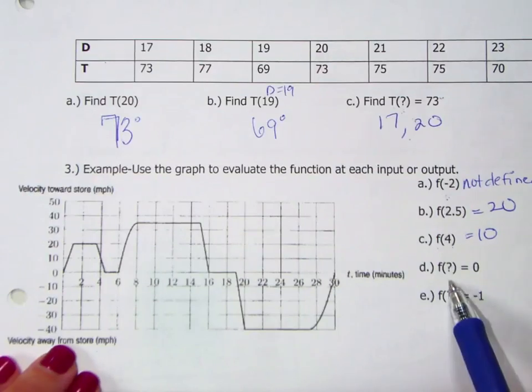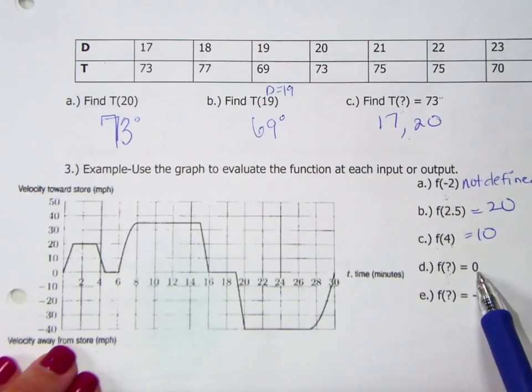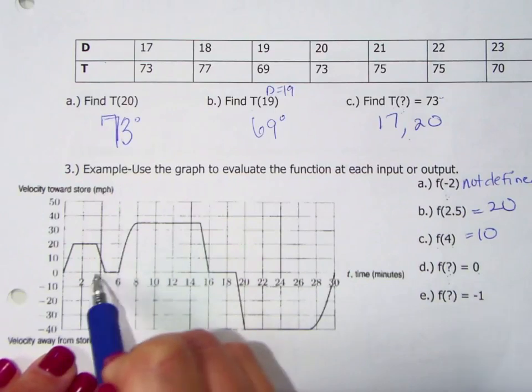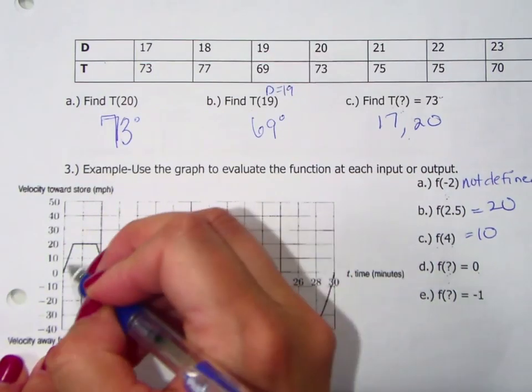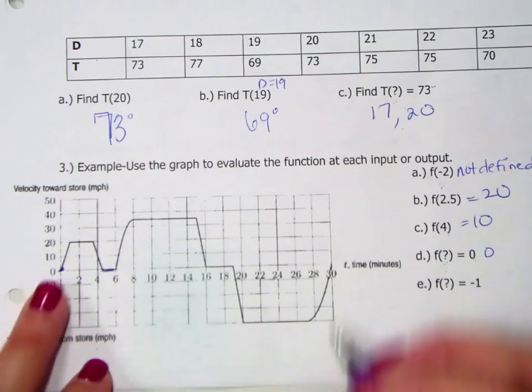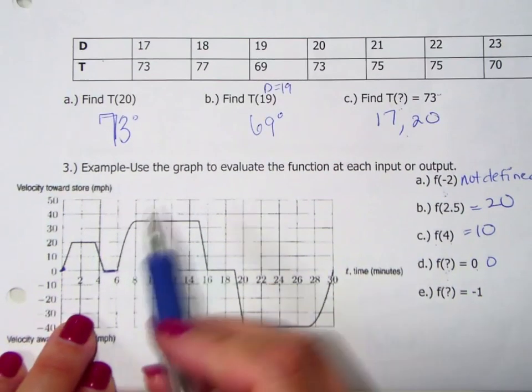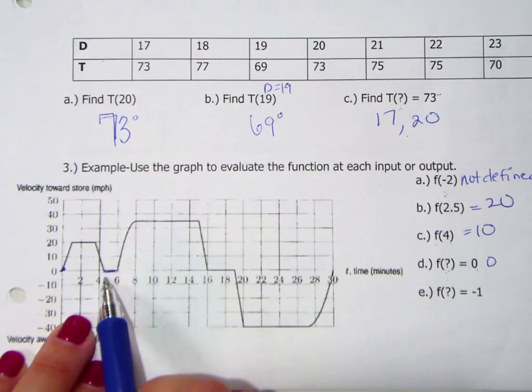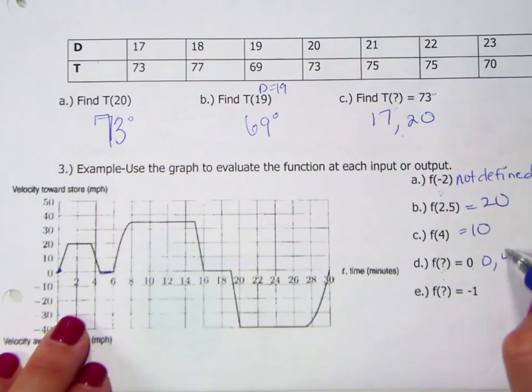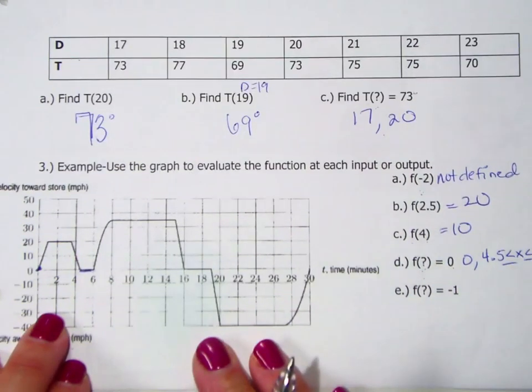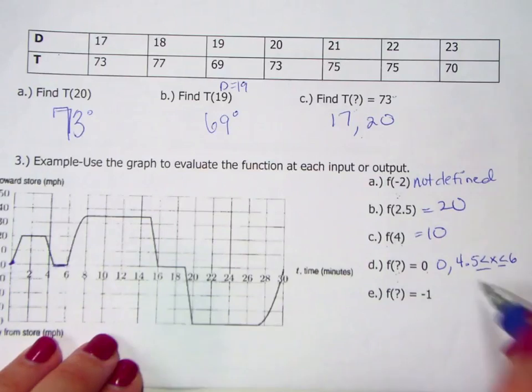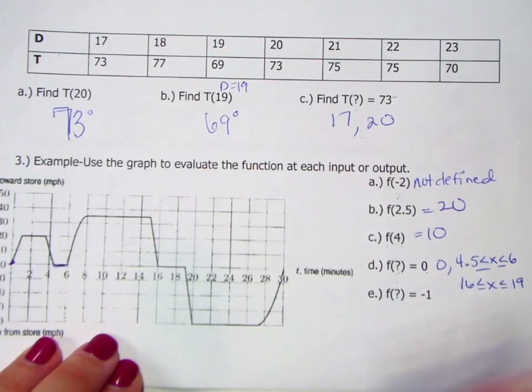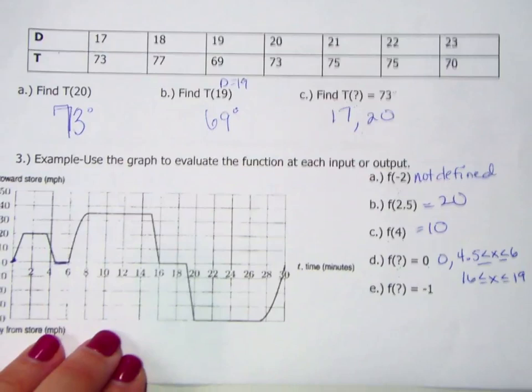Now going the other direction, what's the input when the output is 0? So this time I'm looking when my output is 0. So I'm seeing several times here. Well, when x is 0, y is 0. From about, what, 4.5 to 6, the output is 0. So when else? Over here, from about 16 to 19. Okay? So there are ranges of when our output is 0.